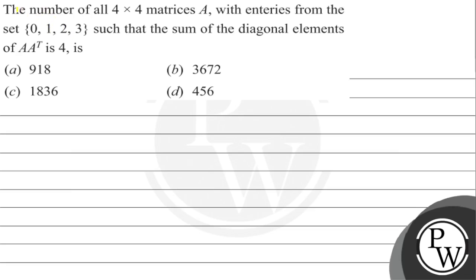Hello guys, this is the Education Sciences. The number of all 4×4 matrices A with entries from the set {0, 1, 2, 3}, such that the sum of the diagonal elements of AA^T is 0. The options are: P = 918, P = 3672, P = 1556, P = 456.